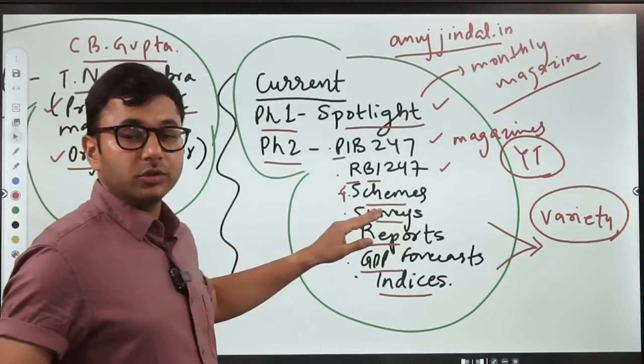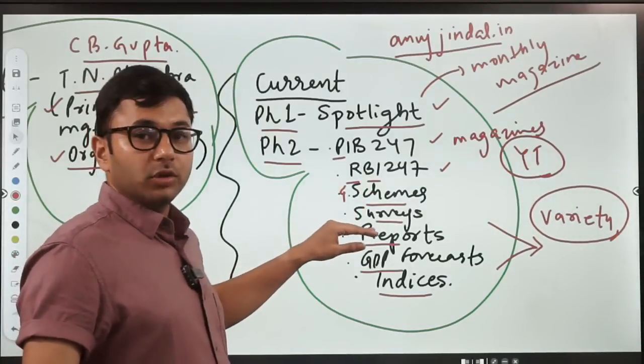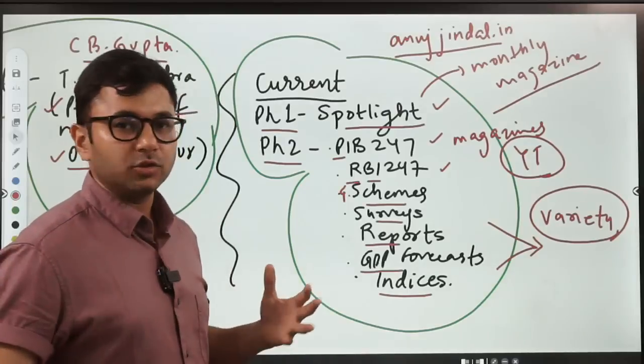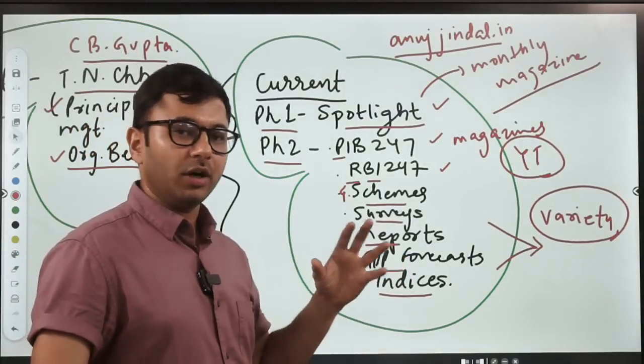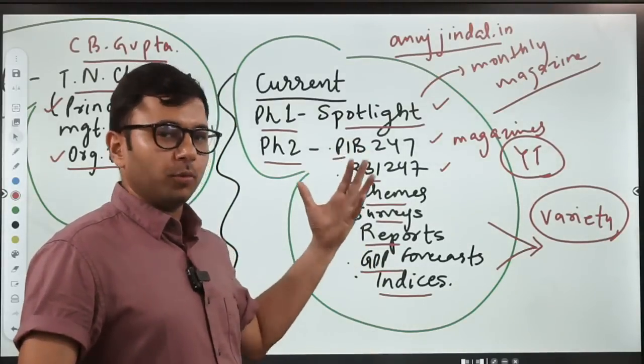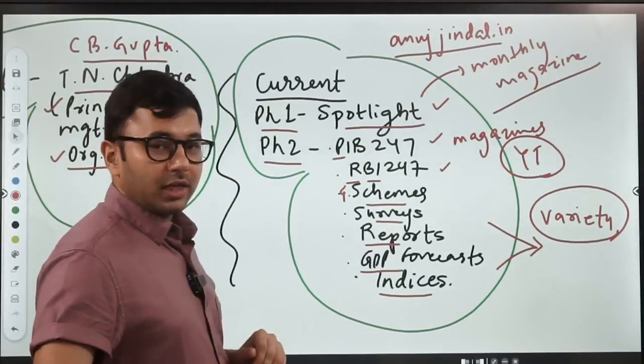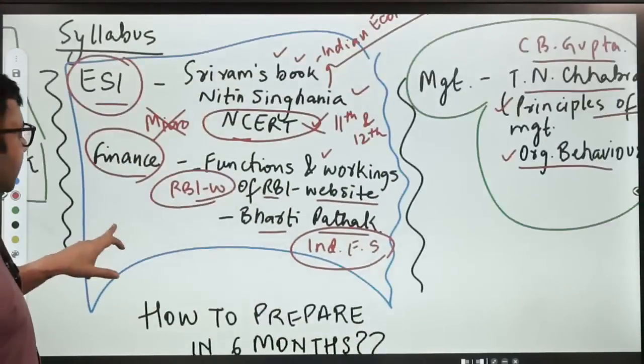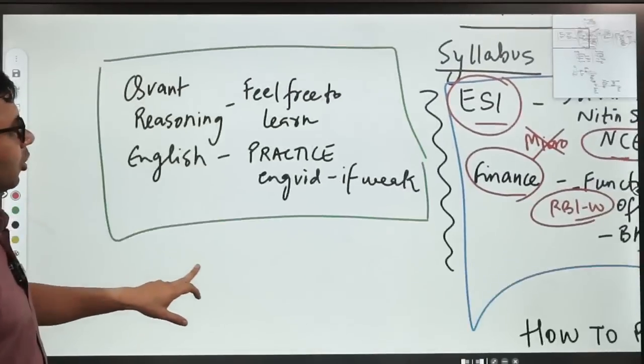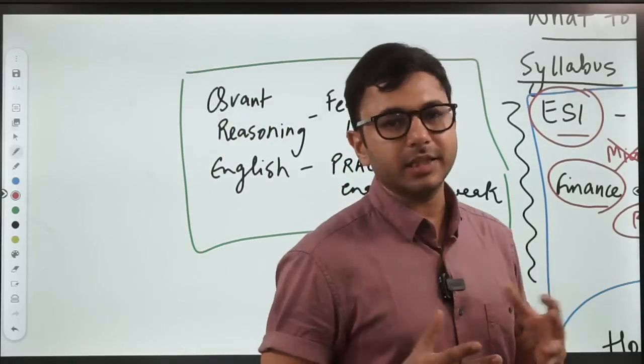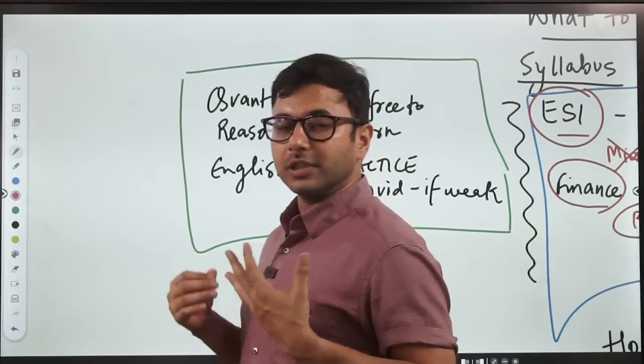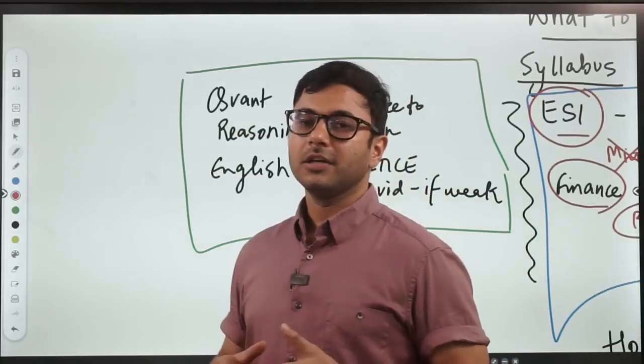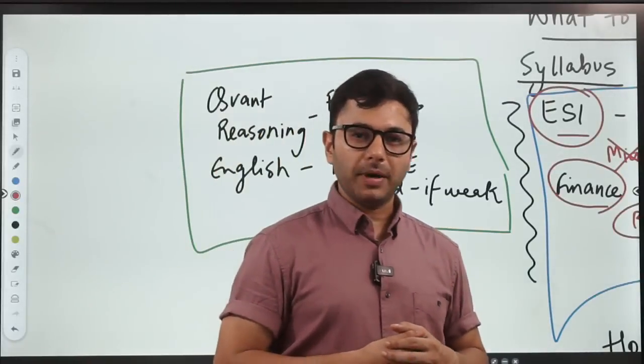Surveys which includes annual surveys, economic survey, budget, annual reports which includes RBI annual report and lot of other reports like census, the decadal report, family health survey. A lot of reports keep coming out, you have to keep covering them. GDP forecasts and indices, all these things you have to cover. Current is the most tricky area because you will not find everything at one place. Everybody needs money to survive, therefore we also have to make sure that we charge for certain services.